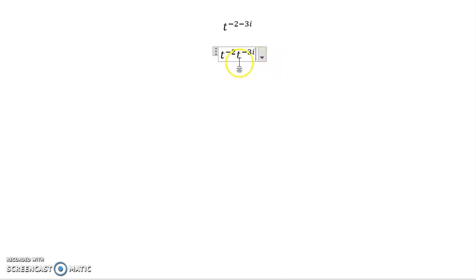So then in order to apply Euler's formula, I need to take this complex portion and I need to turn it into e to something. And so the way we're going to do that is to recall that t is equal to e^(ln t). And so when we make this substitution, just for the second one, we don't need to worry about it for this one, we get t^(-2) times e^(ln t)^(-3i).